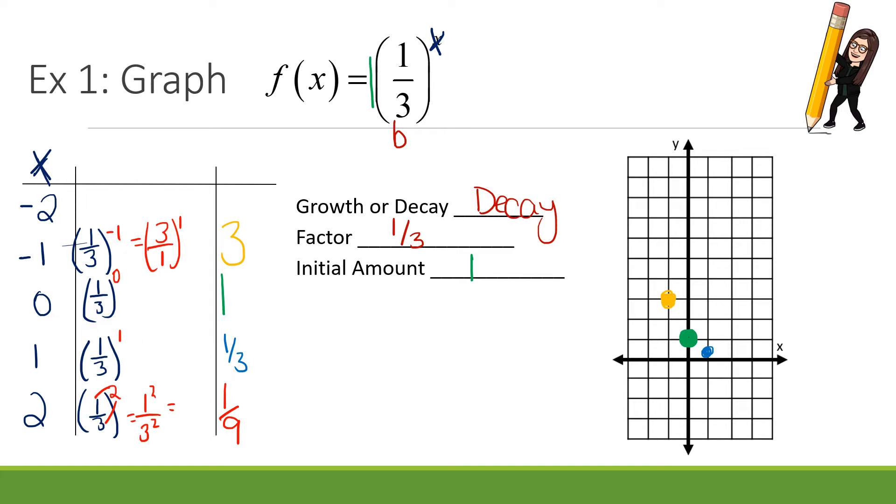Let's try one more. 1 third, but this time it's to the negative second. Well, the negative flips it, right? Now my exponent's positive. Let's distribute that squared. What's 3 squared? 9. What's 1 squared? 1. We've got an answer of 9. At negative 2, I'm at 9. 1, 2, 3, 4, 5, 6, 7, 8, 9.